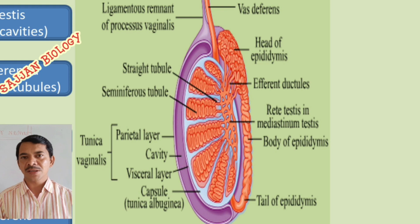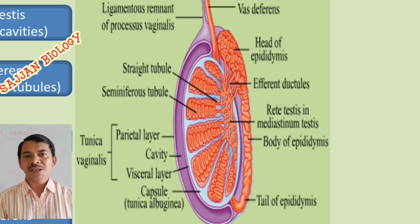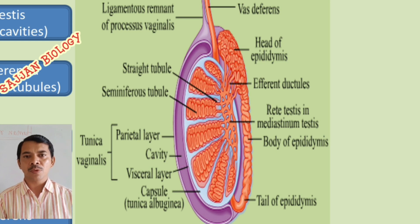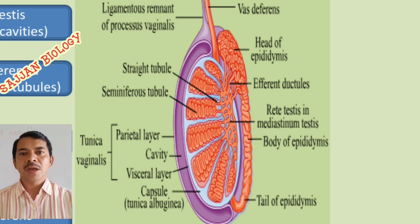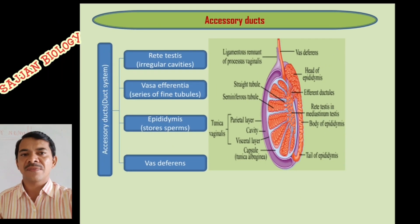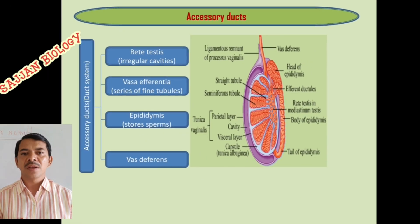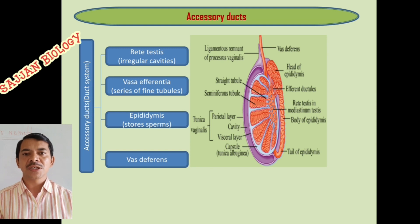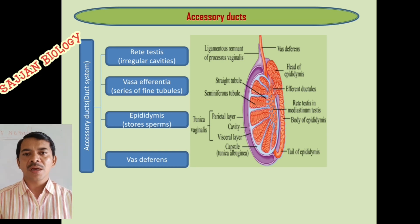The rete testis is a network of irregular cavities formed by seminiferous tubules. The mediastinum testis is a white fibrous connective tissue that extends from the upper to the lower part — that is, the posterior part — of the testis. The rete testis opens into vas efferentia to carry sperms.